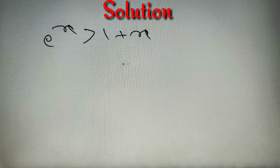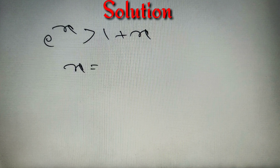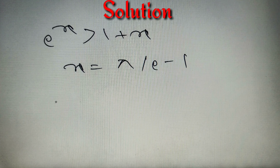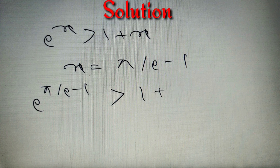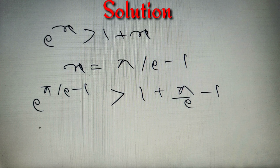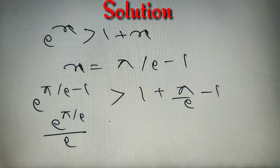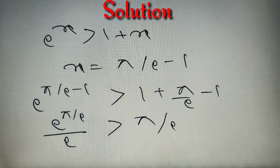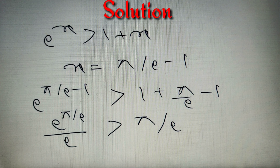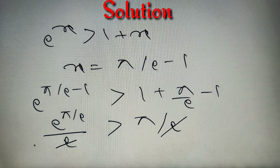Now that we've proved e^x > 1 + x, in the next step you'll see why. If we substitute x = π/e − 1, we get e^(π/e − 1) > 1 + (π/e − 1). This simplifies to e^(π/e) / e > π/e. Since e appears in the denominator on both sides, it cancels, leaving us with e^(π/e) > π.